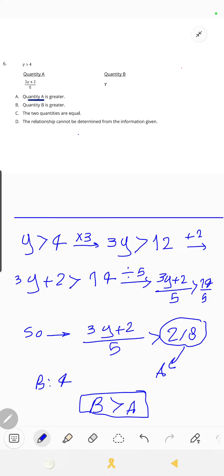The options are: A - quantity A is greater, B - quantity B is greater, C - the two quantities are equal, and D - the relation cannot be determined from the information given.